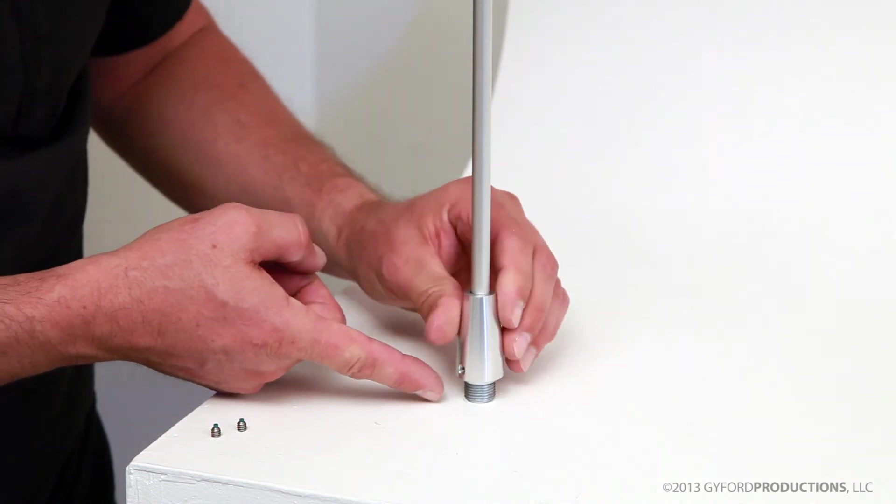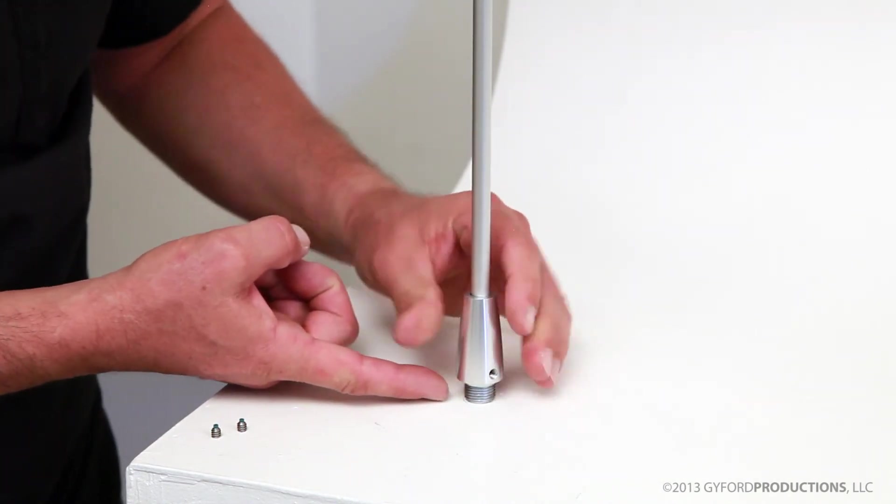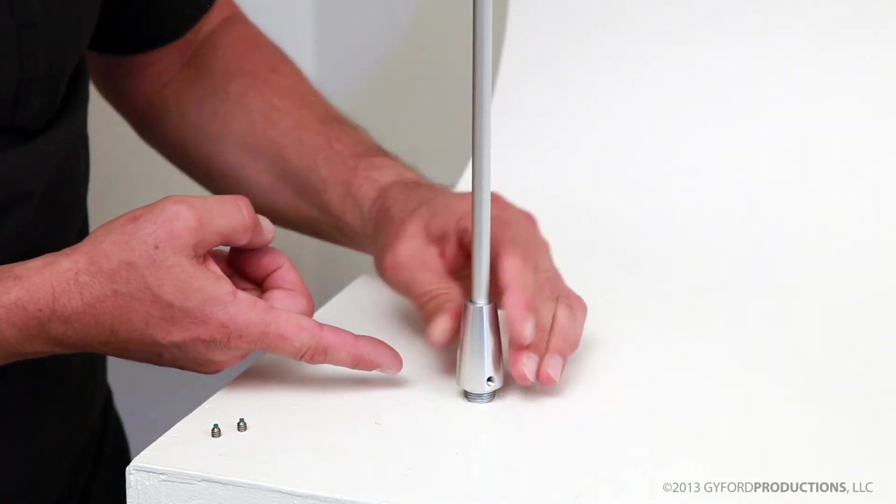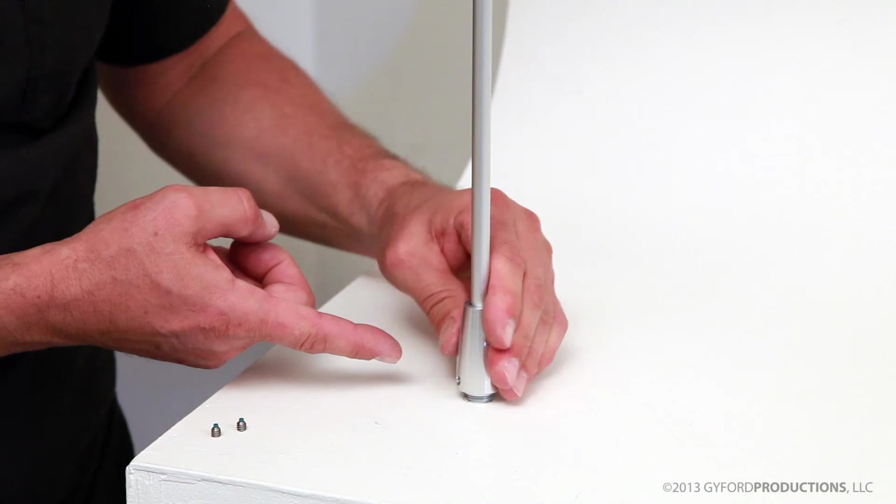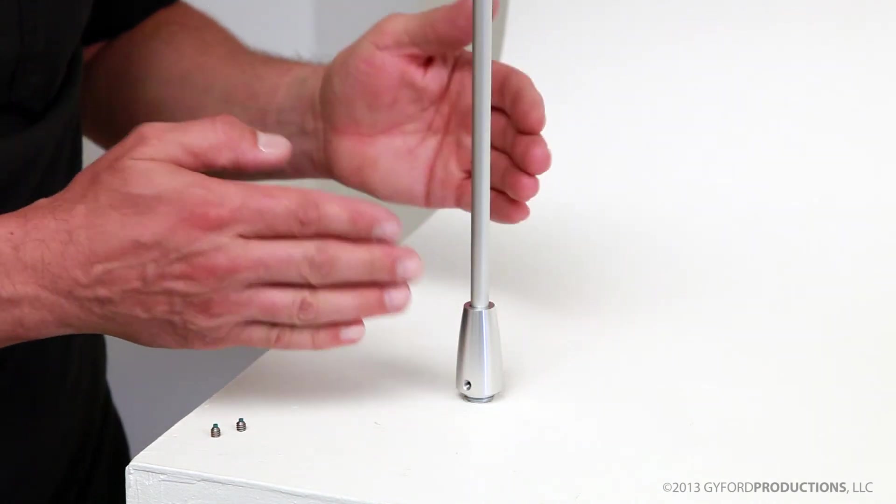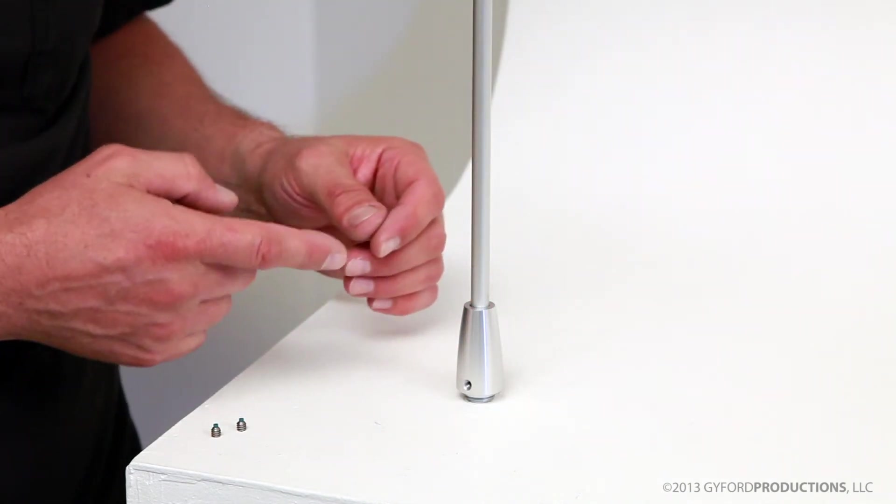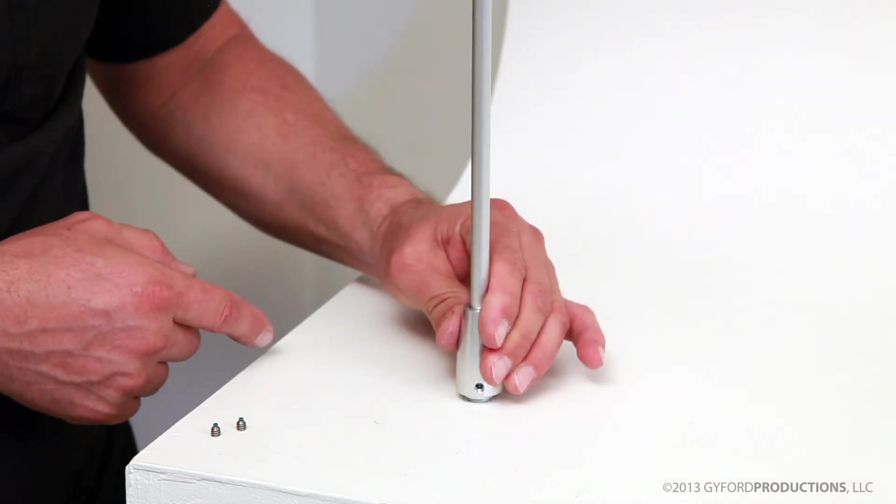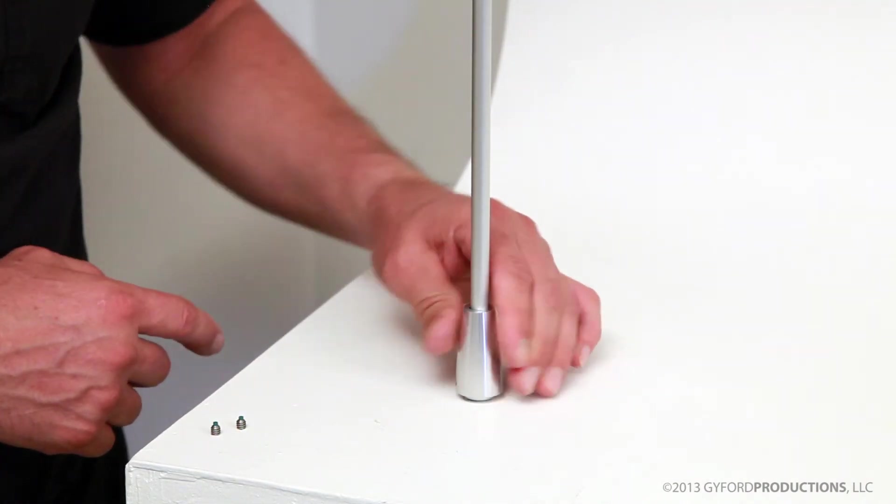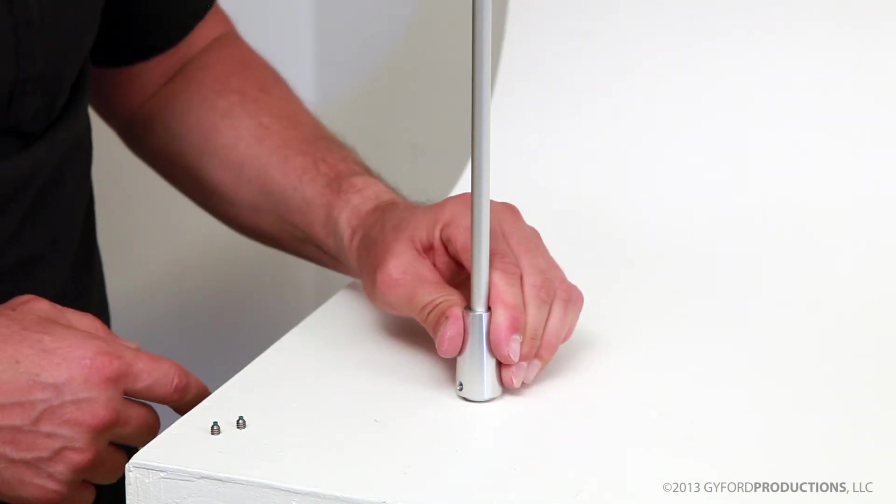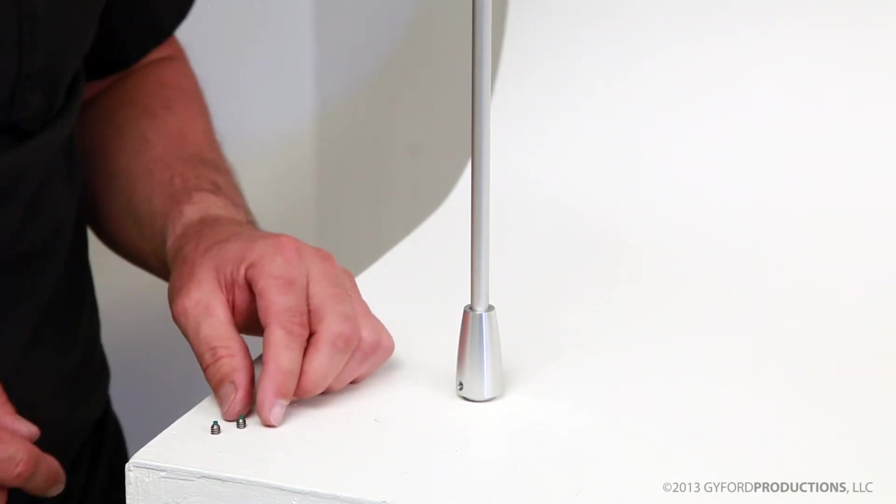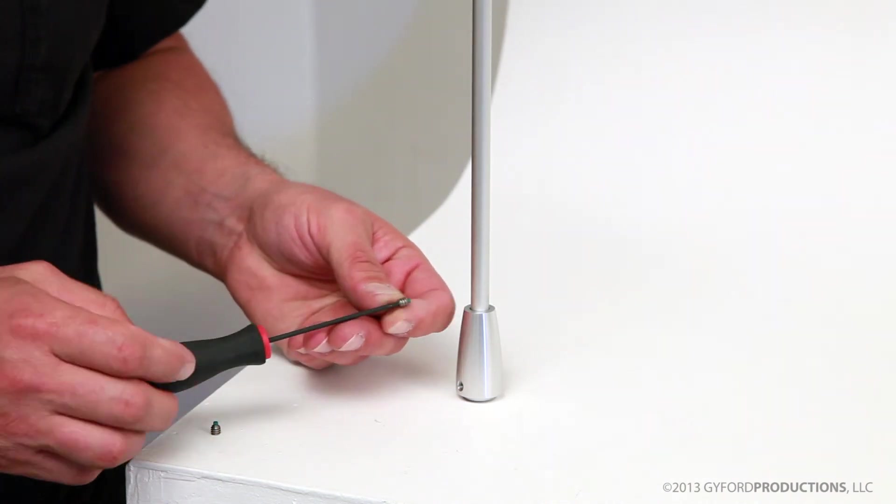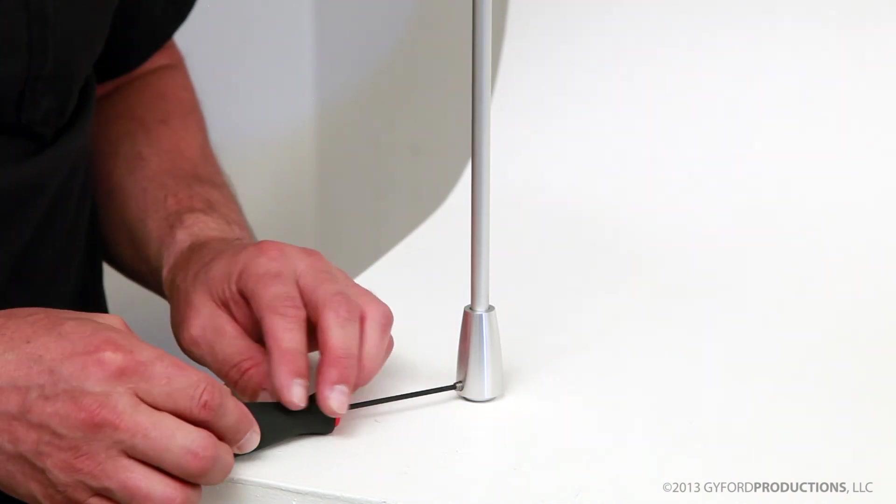Thread the turnbuckle body down onto the TMS, and be careful not to cross thread these. If it's not going in, check to make sure everything is plumb and the TMS has been anchored straight. You may need to loosen the screw holding the TMS just a bit and readjust. The last step is to tighten these set screws on the turnbuckle body to lock it all in.